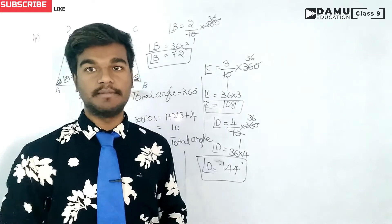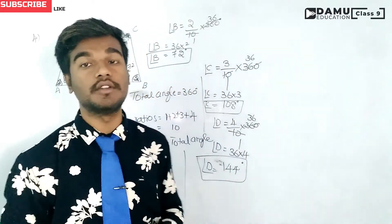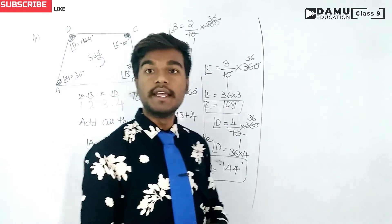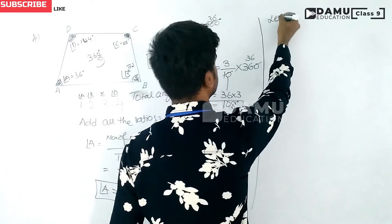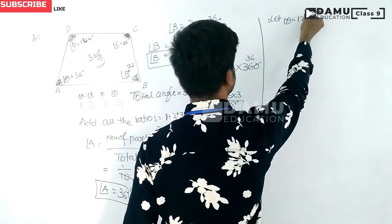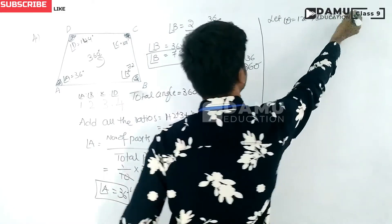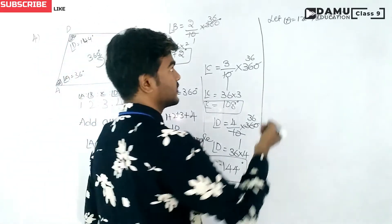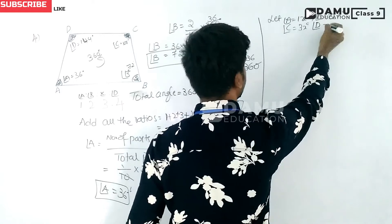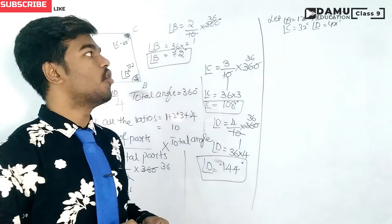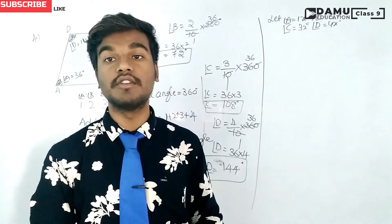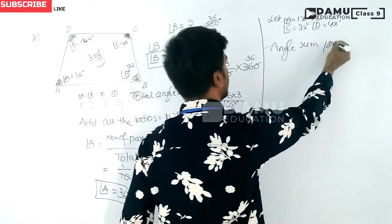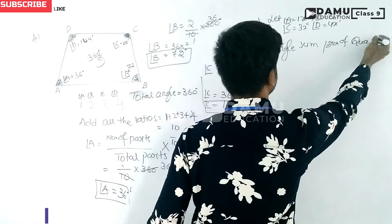Now let's look at another method using the angle sum property. We let angle A equal x degrees, angle B equal 2x degrees, angle C equal 3x degrees, and angle D equal 4x degrees. We are multiplying all ratios by a constant variable x, which we do not yet know and will find by substitution.